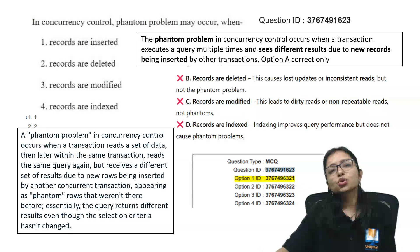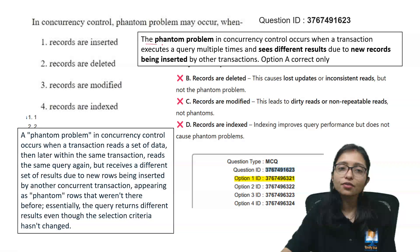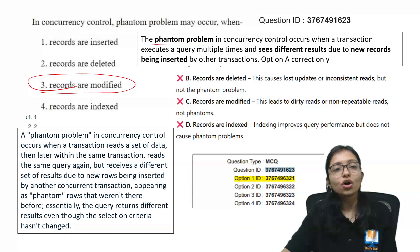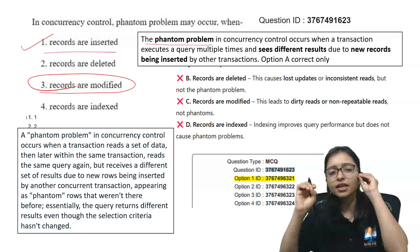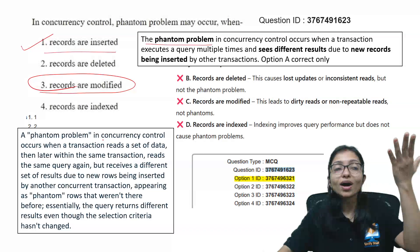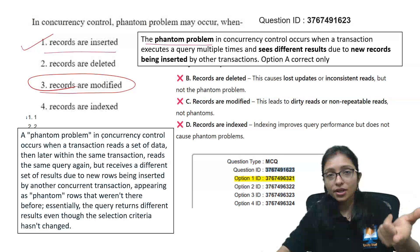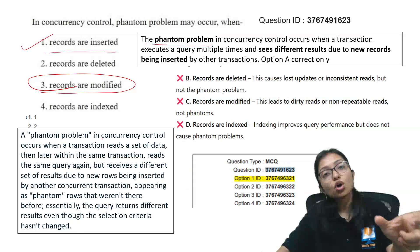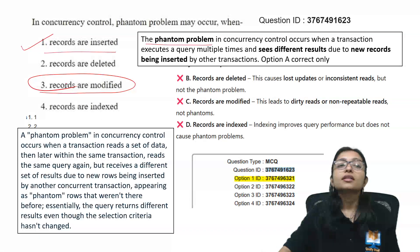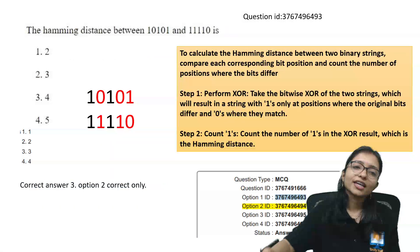This question also had too much confusion and maximum students made a mistake here in the phantom problem. Maximum students are thinking 'record modified,' but it is 'record inserted.' They need to understand the basic definition: phantom problem means when you run the same query you get some result, and after some time you get another result — maybe a row was not present at that time but now a new row appears because something was inserted. That's why this is a phantom problem.